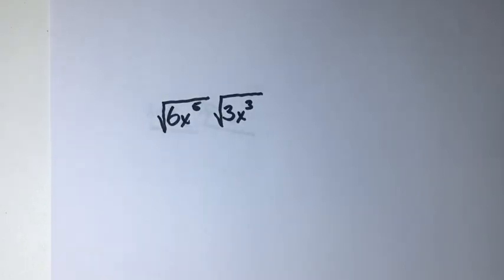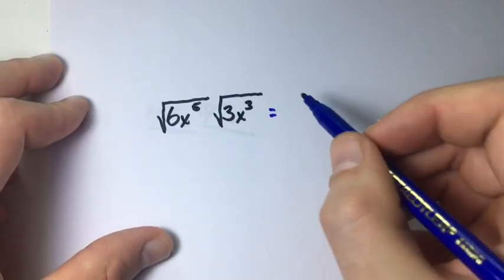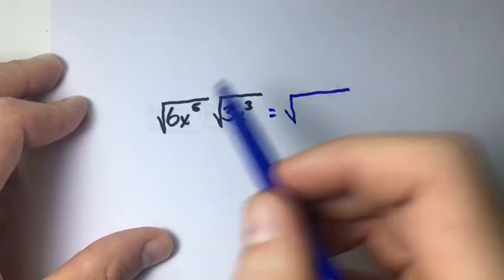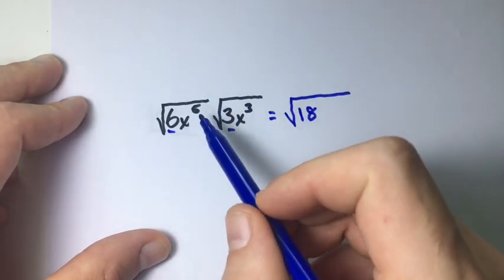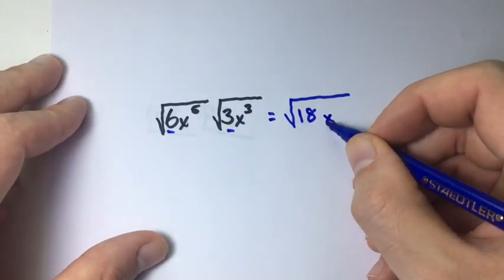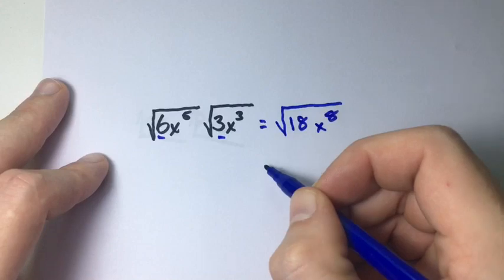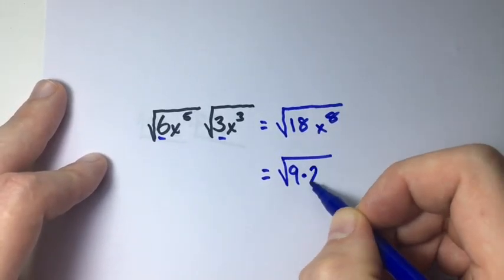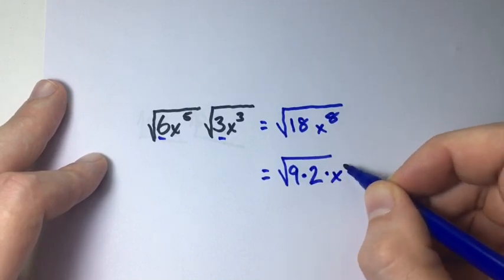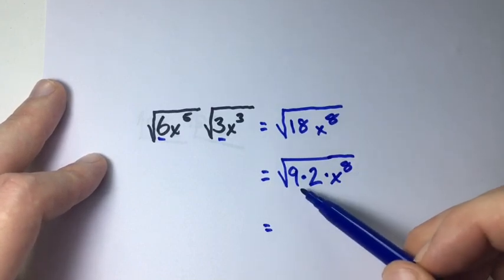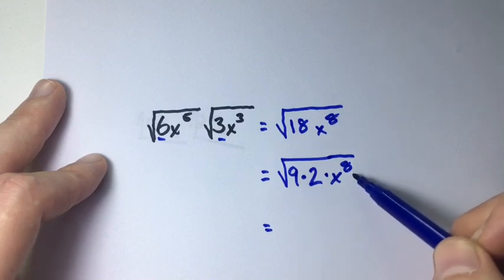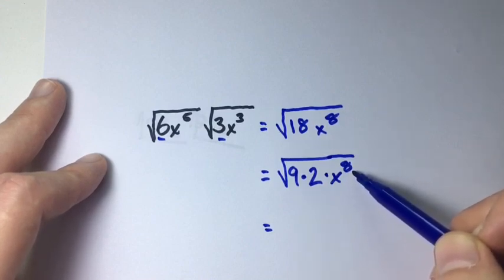One last example: the square root of 6x to the power of 5 times the square root of 3x to the power of 3. Let's multiply them together — 6 times 3 gives us 18, and x to the 5 times x to the 3 gives us x to the power of 8. We can rewrite 18 as 9 times 2, so we have 9 times 2 times x to the 8 under the radical. We know 9 is a perfect square and x to the 8 is a perfect square because it has an even exponent.